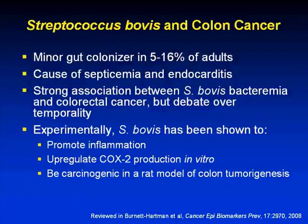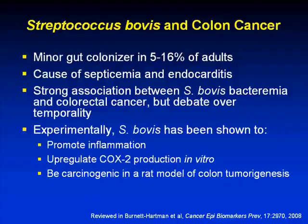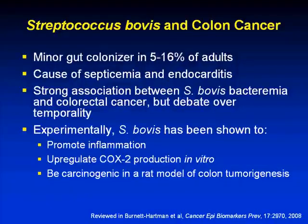Usually you're looking at individuals who already have colon cancer compared to those who do not. By that point, you may already have enough colonic damage that S. bovis is allowed to be present in circulation — and therefore you're measuring it. This issue of temporality — being able to show that S. bovis was there prior to cancer development — is a problem. Experimentally, biologically this could be plausible: the microbes promote inflammation, upregulate COX-2 in epithelial cells in vitro, and have been shown to be carcinogenic in a rat model of colon tumorigenesis.